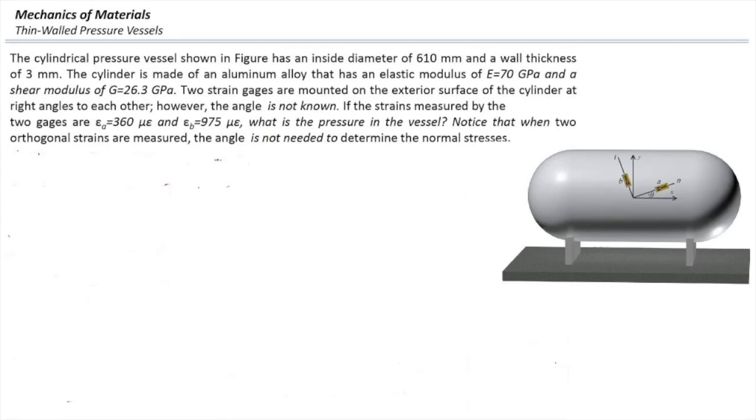The cylindrical pressure vessel shown in the figure has an inside diameter of 610 mm and a wall thickness of 3 mm.